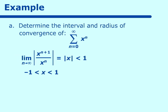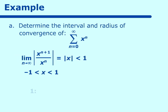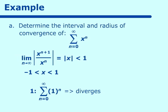We must check the endpoints. Putting in negative 1, we get the series (-1)^n, which diverges. Checking the other endpoint, x = 1 gives the series 1^n, which also diverges. So the interval of convergence is the open interval from negative 1 to 1. If either endpoint had converged, we would include it with an equal sign. The radius of convergence is 1.